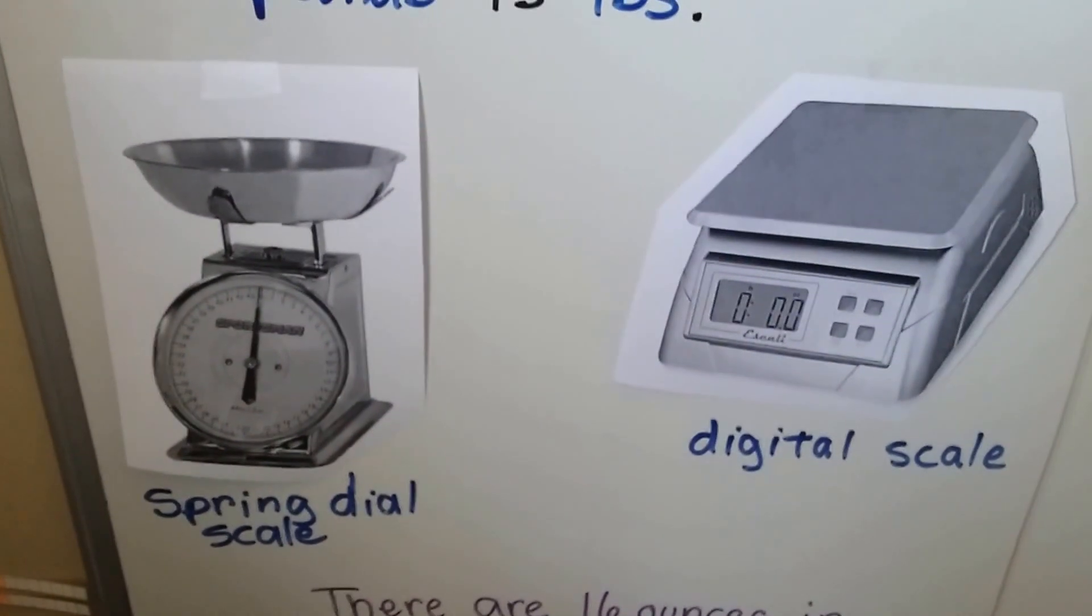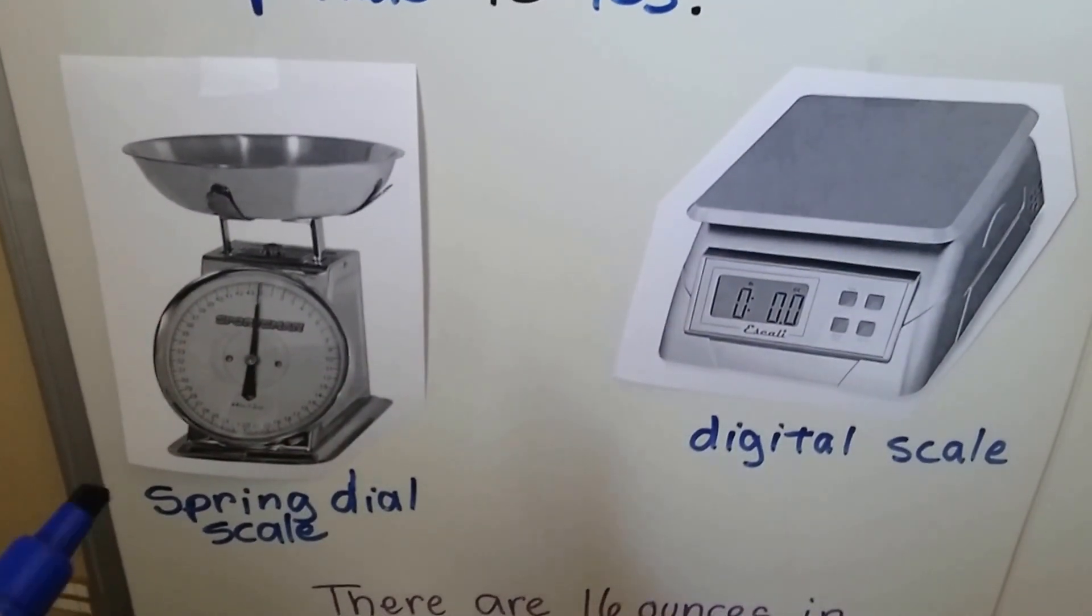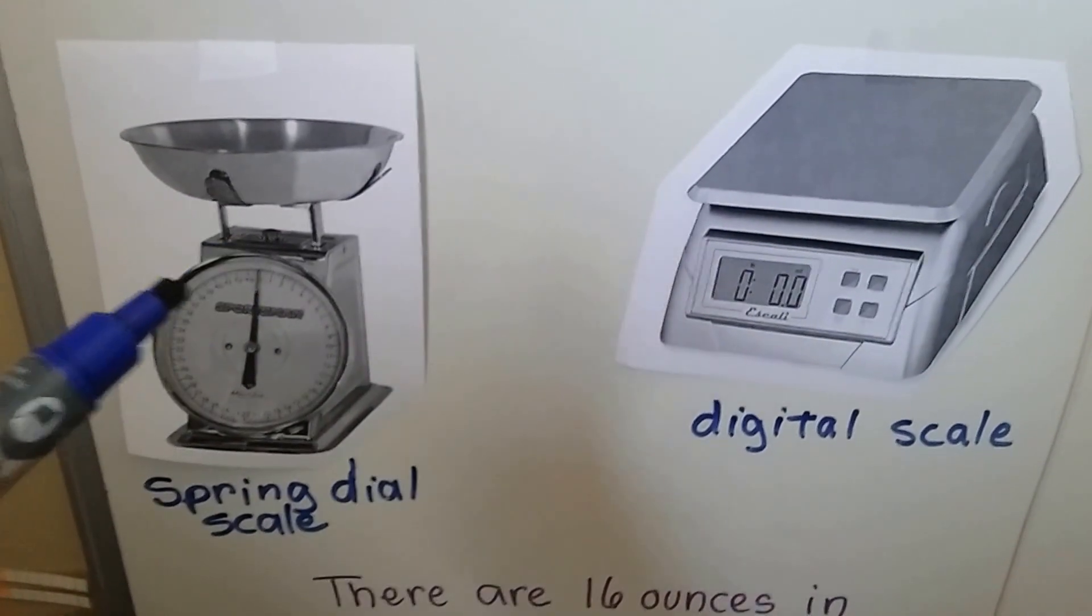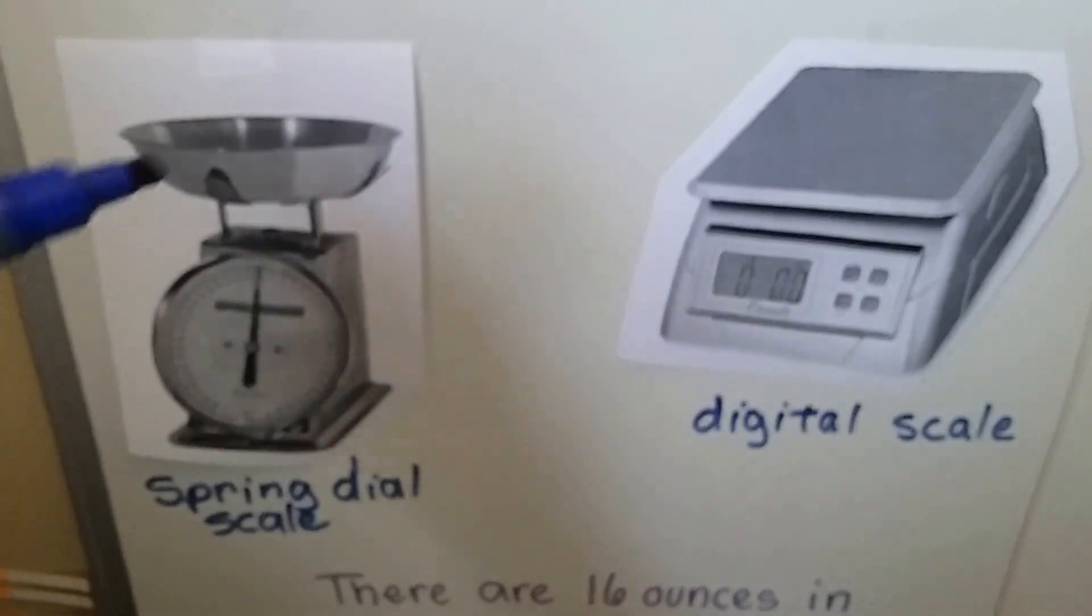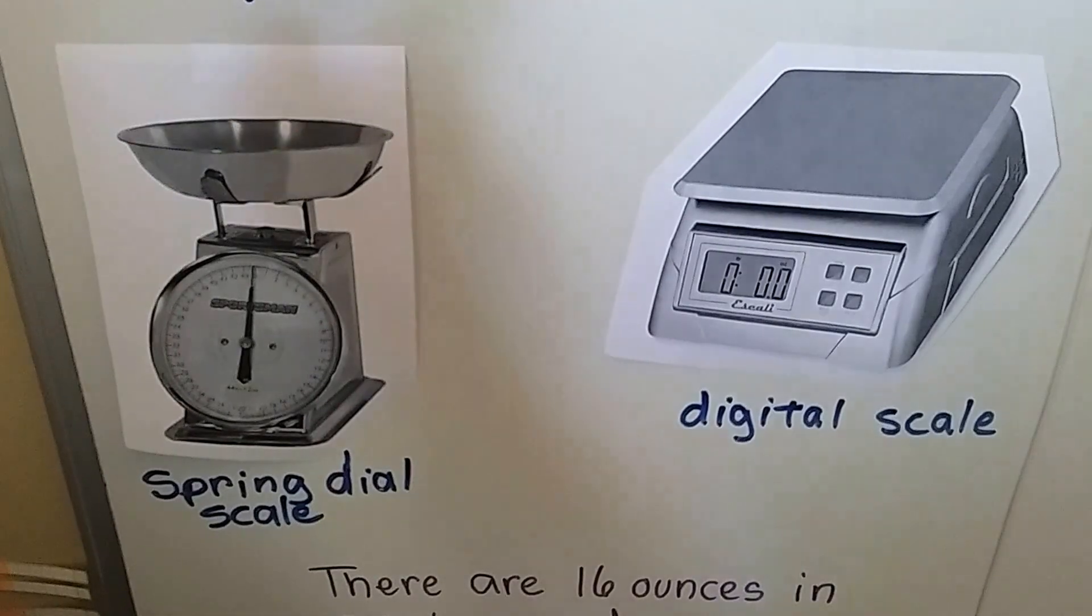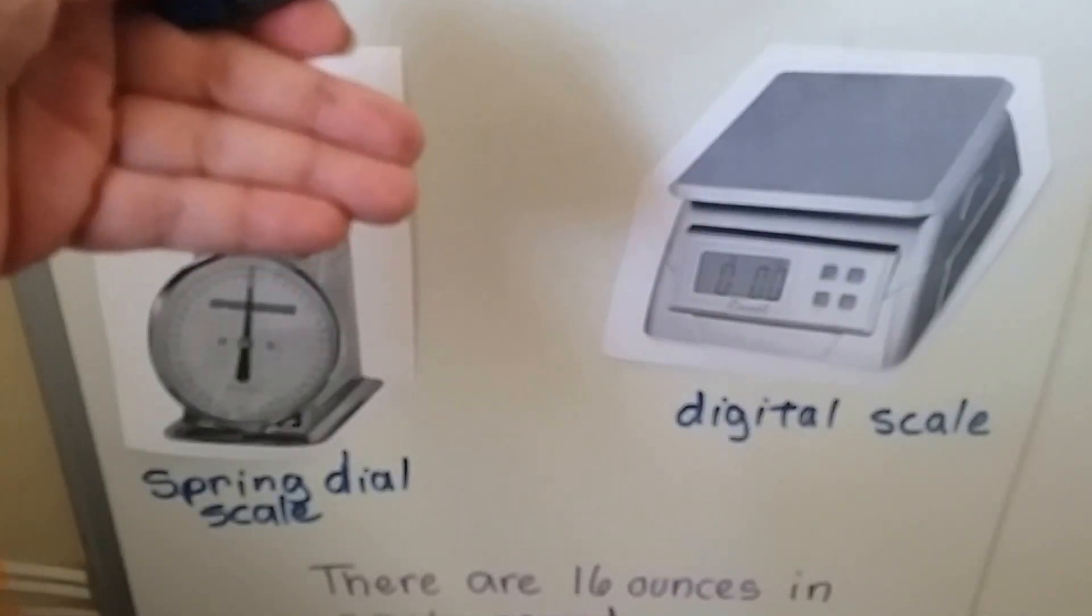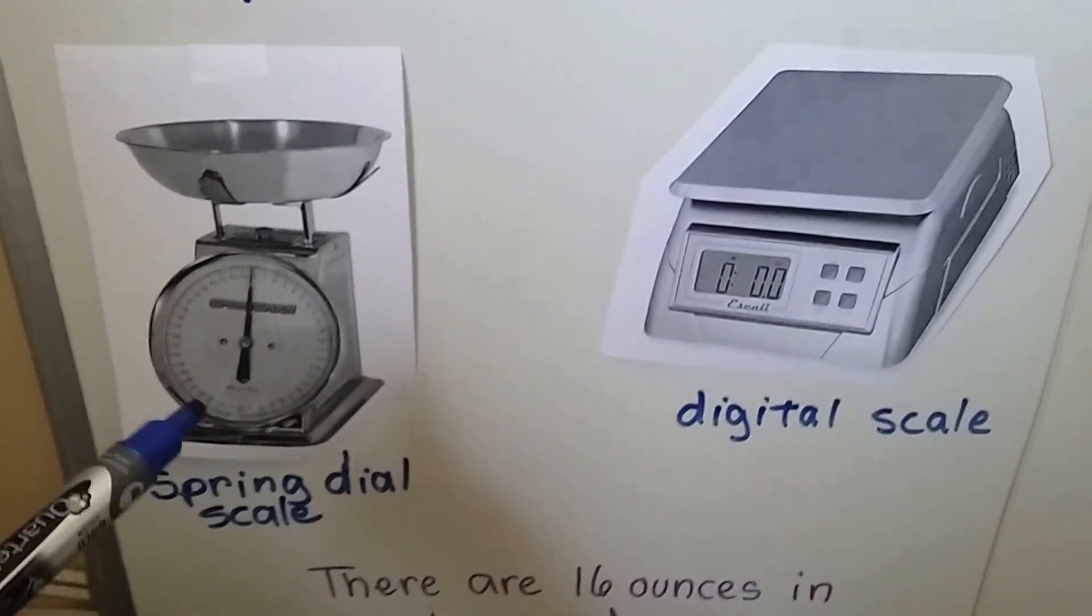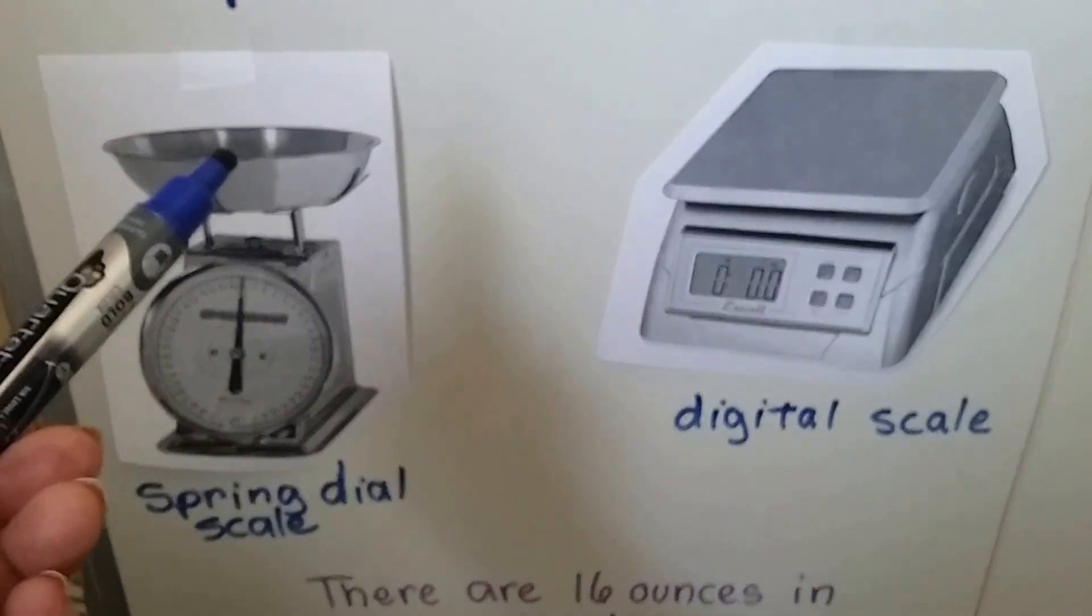We have a couple of different types of scales. This is called a spring dial scale. There's a spring inside of here, behind the dial, inside the box. And when you put things in top here, the basket will go down because of the springs. And then this dial will move around and tell you how much it weighs.